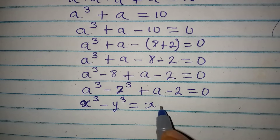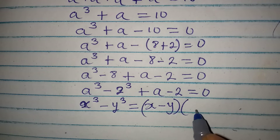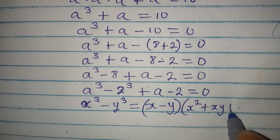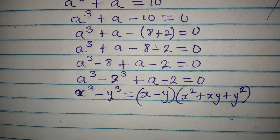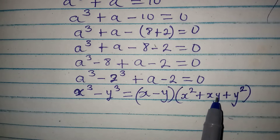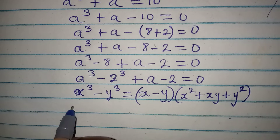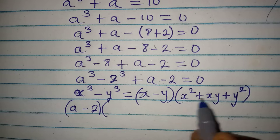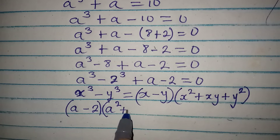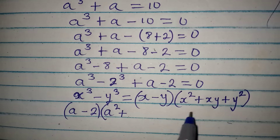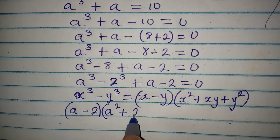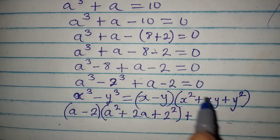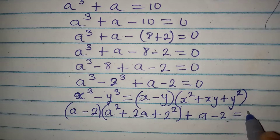...plus xy plus y squared. Because of this identity, I'll express our expression in this form. With x = a and y = 2, we get (a - 2) multiplied by (a² + 2a + 4), then plus the remaining term (a - 2), and this equals 0.